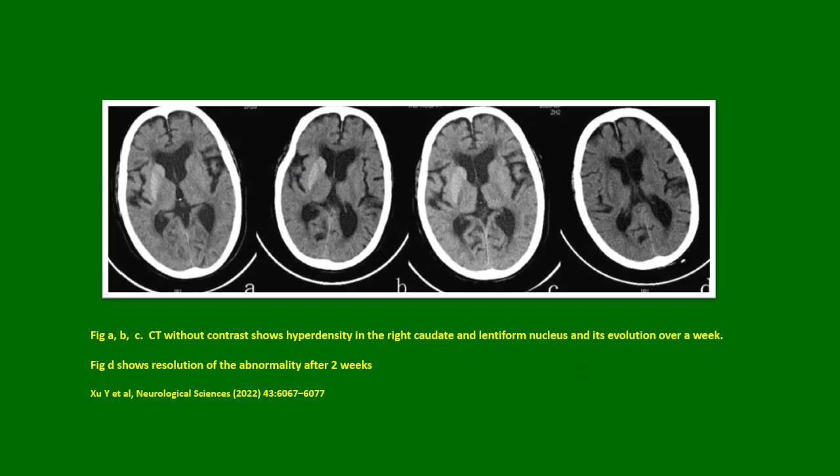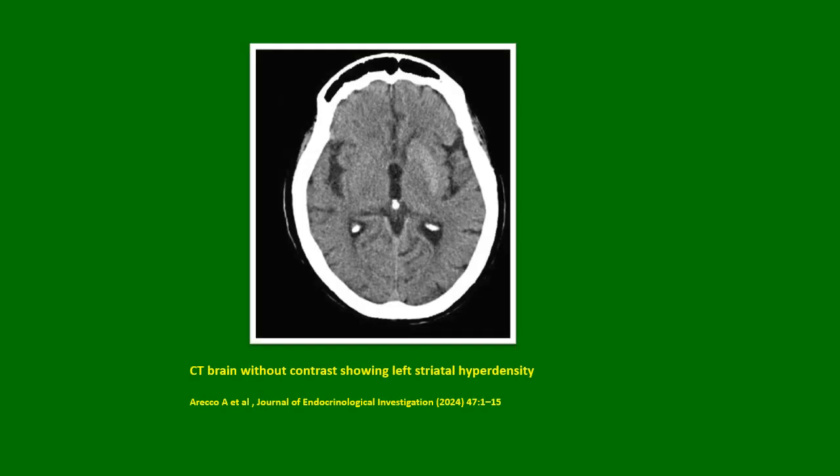In this figure, figures A, B, and C show CT without contrast, which shows hyperdensity in the right caudate and lentiform nucleus and its evolution over a week. Figure D shows resolution of the abnormality after two weeks. This is another CT brain without contrast showing left striatal hyperdensity.